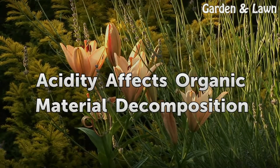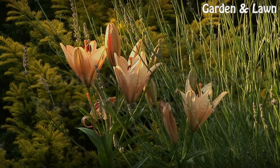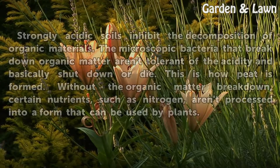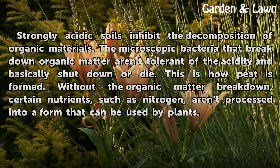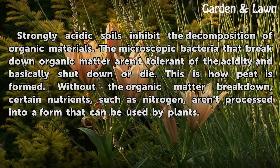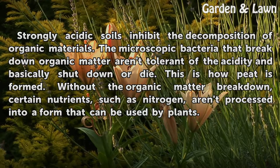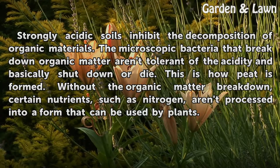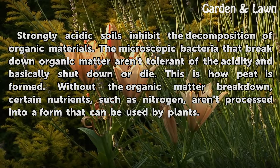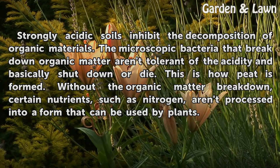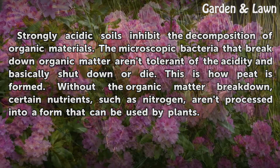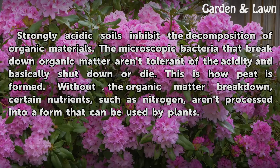Acidity affects organic material decomposition. Strongly acidic soils inhibit the decomposition of organic materials. The microscopic bacteria that break down organic matter aren't tolerant of the acidity and basically shut down or die. This is how peat is formed. Without the organic matter breakdown, certain nutrients, such as nitrogen, aren't processed into a form that can be used by plants.